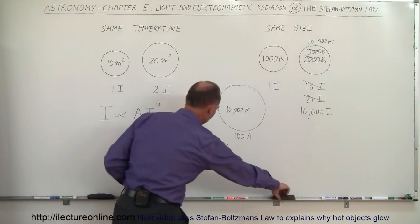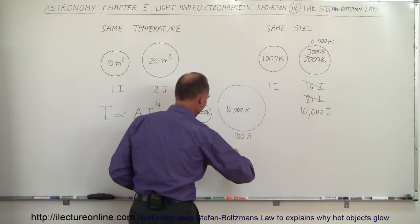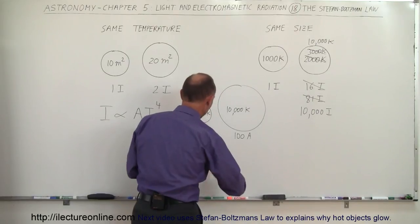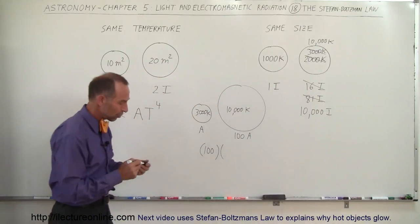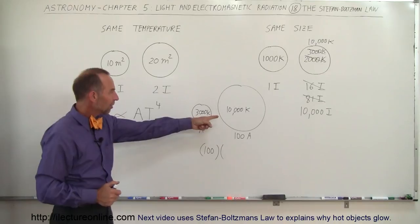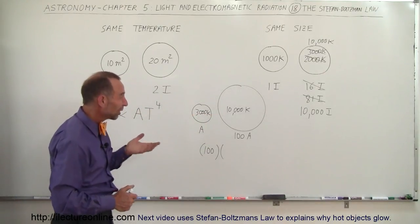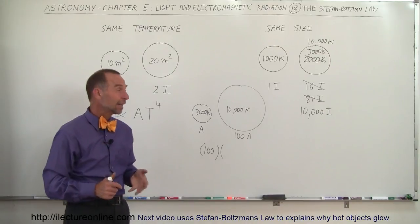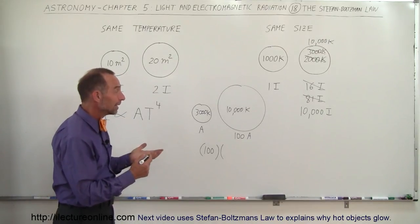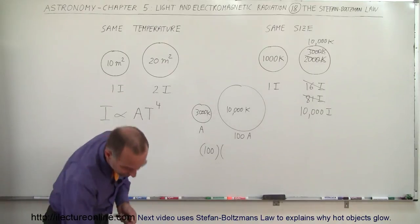Then we multiply times the increase due to temperature. Notice 10,000 versus 3,000, that's more than three times as much, more like 3.3. If we raise 3.3 to the fourth power, let's do that on the calculator.